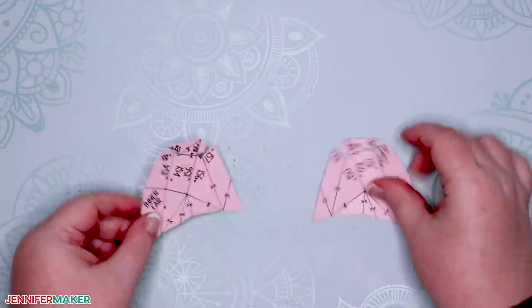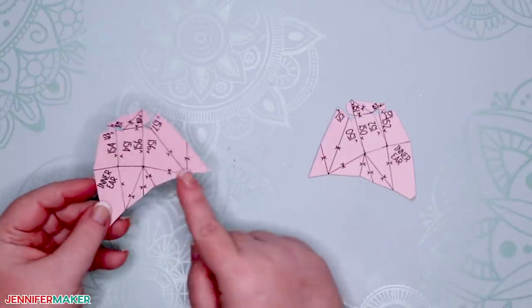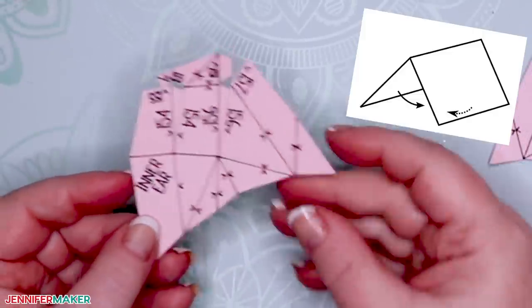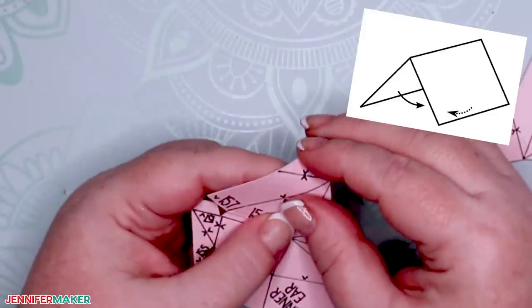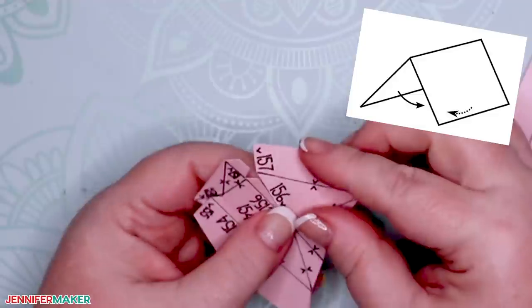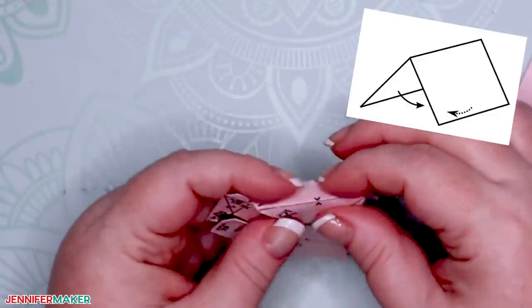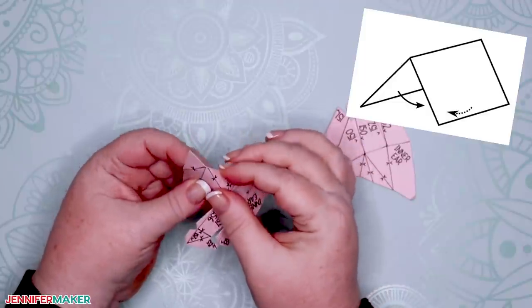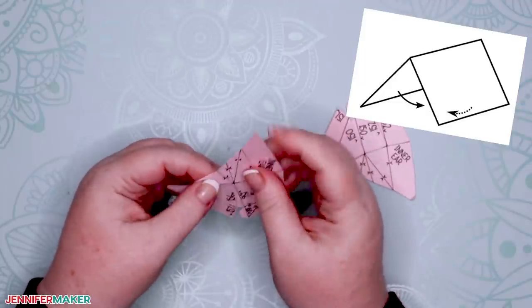But some of the folds will be fold outs, also known as mountain folds, which are indicated by two symbols like this. If you see those, fold them outward with the pen lines on the outside of the fold rather than in. For a mountain fold, the crease is at the top and the paper is folded behind itself. For example, the inner ear folds have these symbols and should be folded like this.